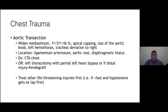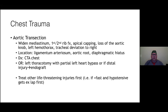Aortic transection is characterized by apical capping, loss of the aortic knob, and widened mediastinum — associated with first and second rib fractures. Typical location is at the ligamentum arteriosum, sometimes at the root of the aorta or diaphragmatic hiatus. It's usually found on chest CT or CTA. The approach is a left thoracotomy, sometimes with partial left heart bypass; distal injuries can sometimes be managed with an endograft. More life-threatening injuries should be treated first; many aortic transections are contained and can be treated in a delayed fashion.